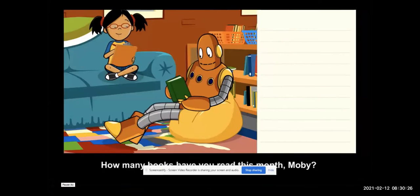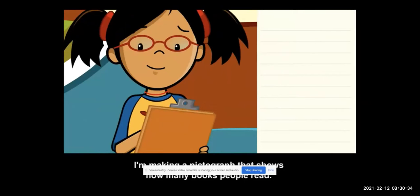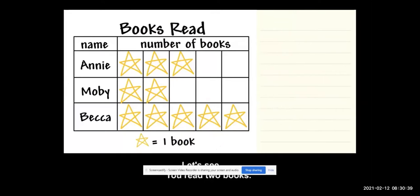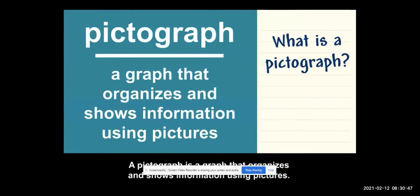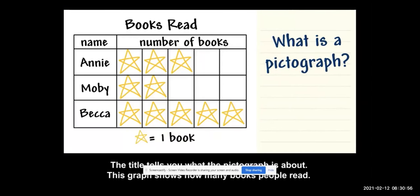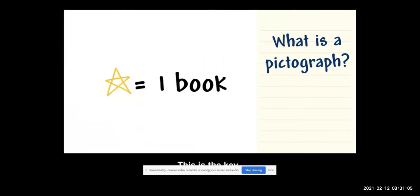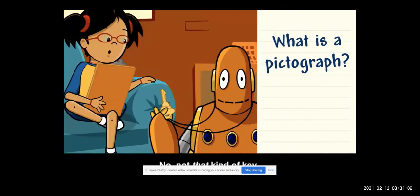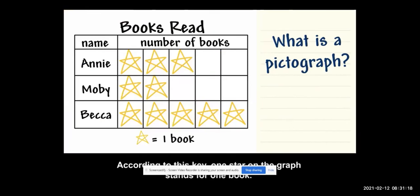How many books have you read this month, Moby? Making a picture graph that shows how many books people read — you read two books. A picture graph is a graph that organizes and shows information using pictures. The title tells you what the picture graph is about. The labels show the names of people and the number of books each person read. The key explains what each picture stands for. According to this key, one star on the graph stands for one book.